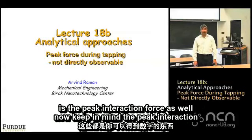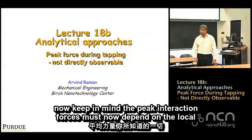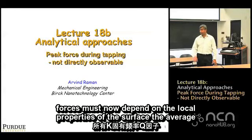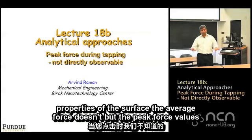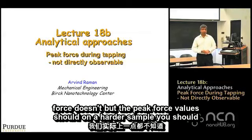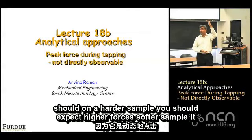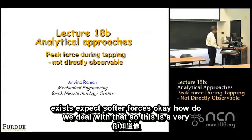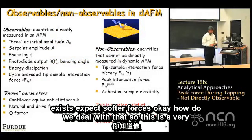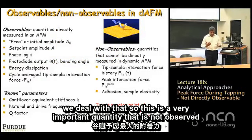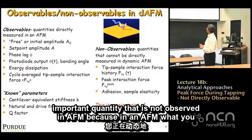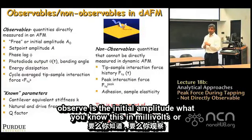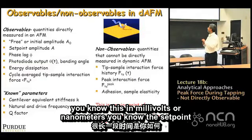Peak interaction forces must depend on the local properties of the surface — the average force doesn't, but the peak force value should. On a harder sample you should expect higher forces; on a softer sample, softer forces. In AFM, what you observe is the initial amplitude in millivolts or nanometers, the set point amplitude, and the phase lag as you scan a sample.